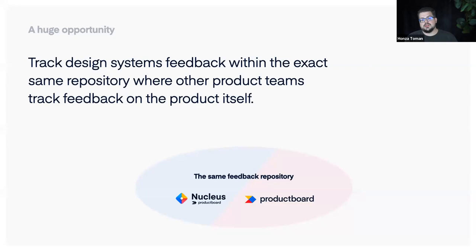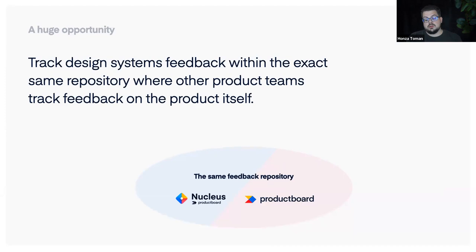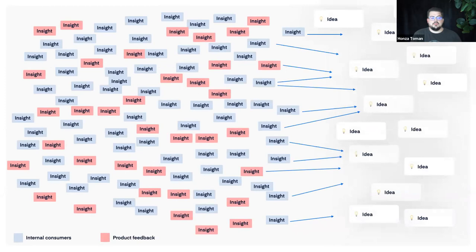I realized this is a huge opportunity to use this feedback for prioritizing things we'll work on or document in our design system. We track design system feedback in the same feedback repository as product feedback. If you're not tracking feedback even for your product, this can be a nice opportunity for your design system team to become a champion for that organizational change. When you track internal consumer feedback and product feedback together, there are lots of insights and ideas to work with.